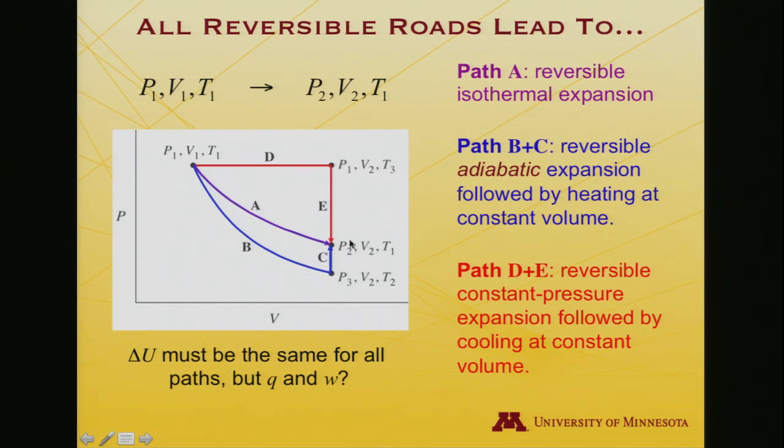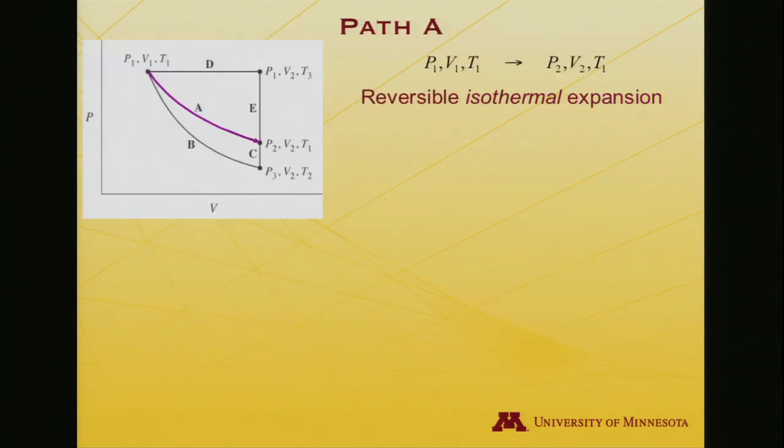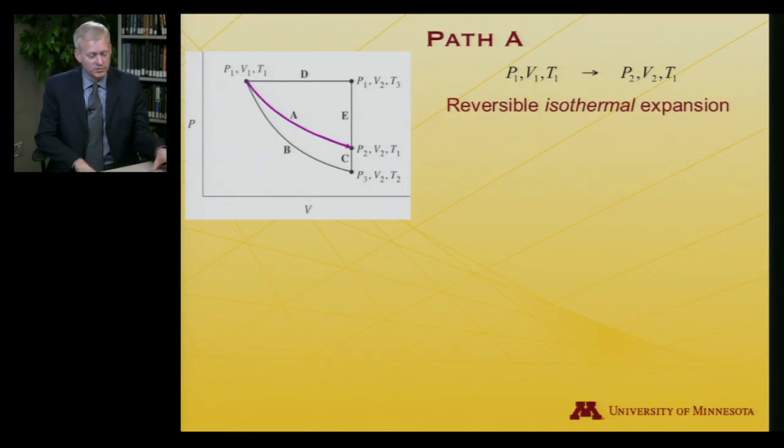Delta U is going to be the same for all paths because it's a state function. It only depends on the start and end point, but we're going to explore how Q and W, heat and work, differ. So let me start with the reversible isothermal expansion.